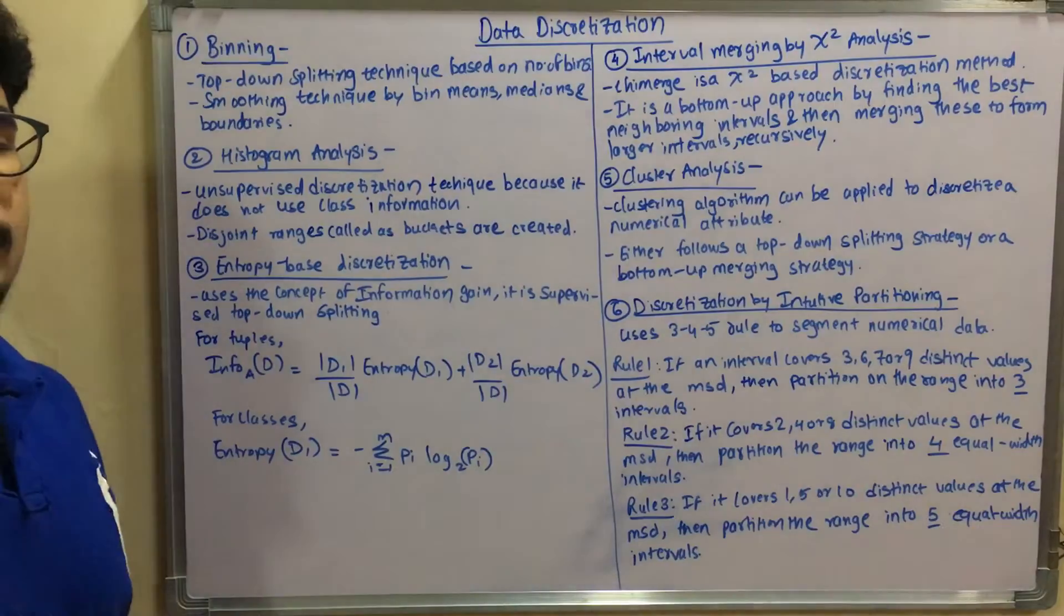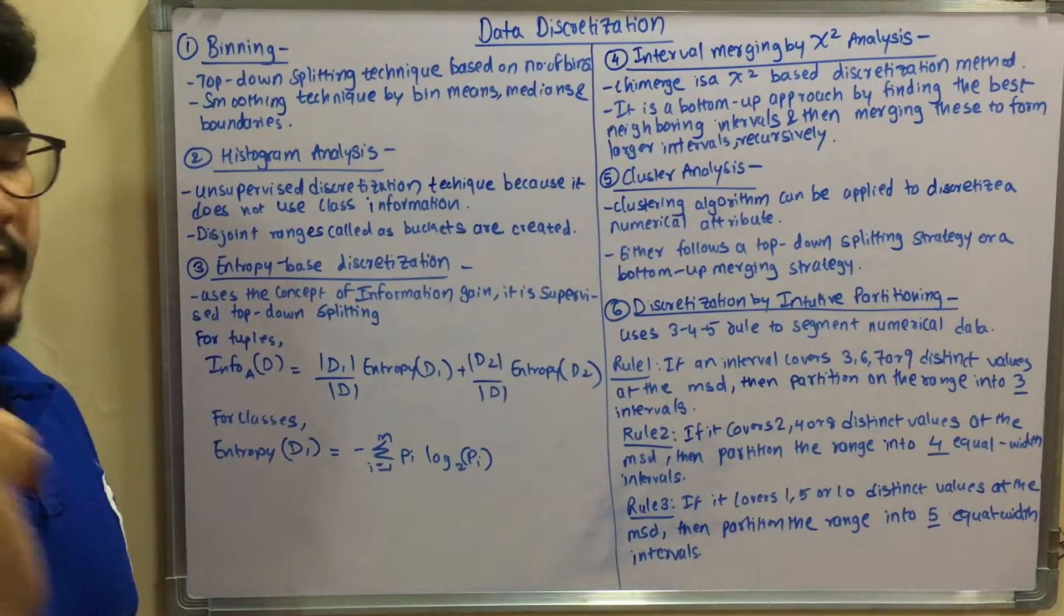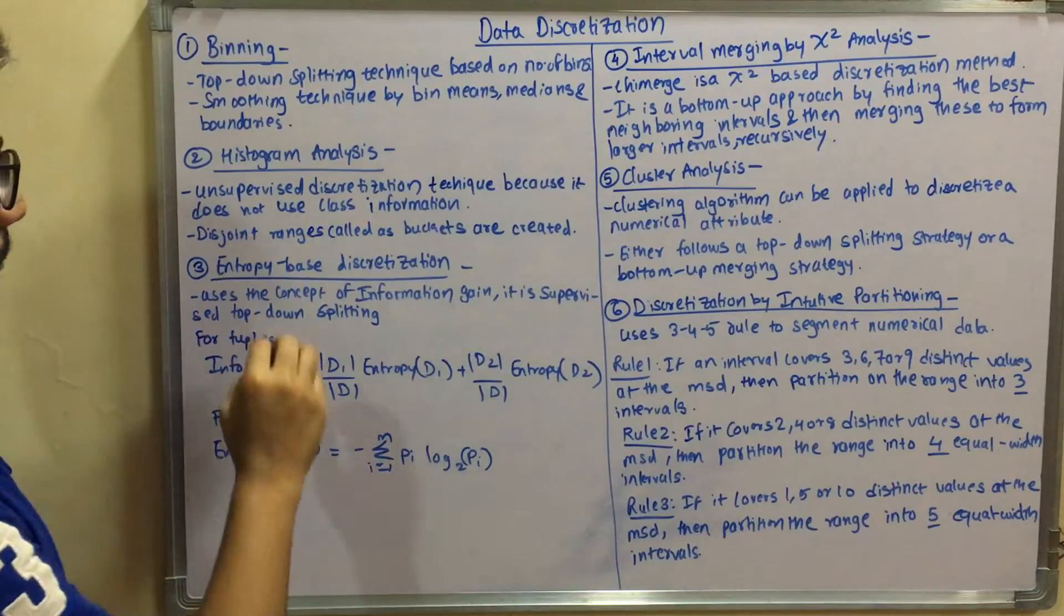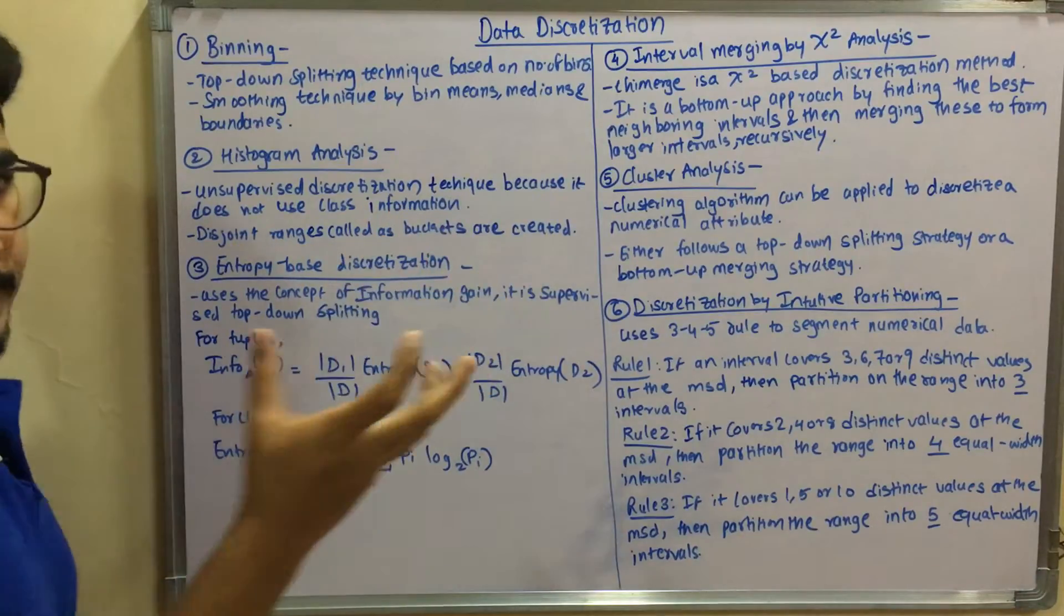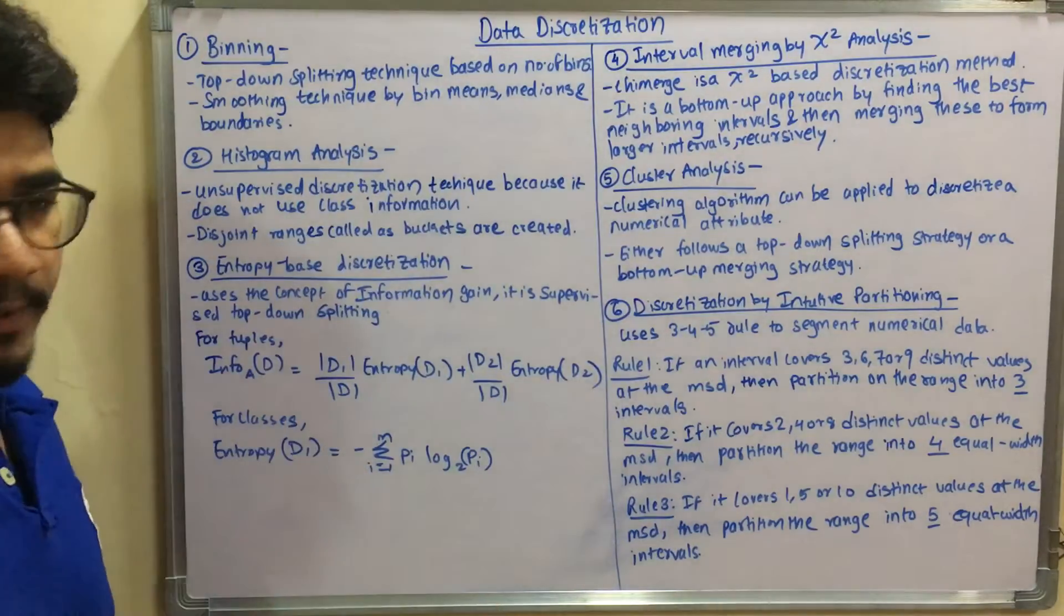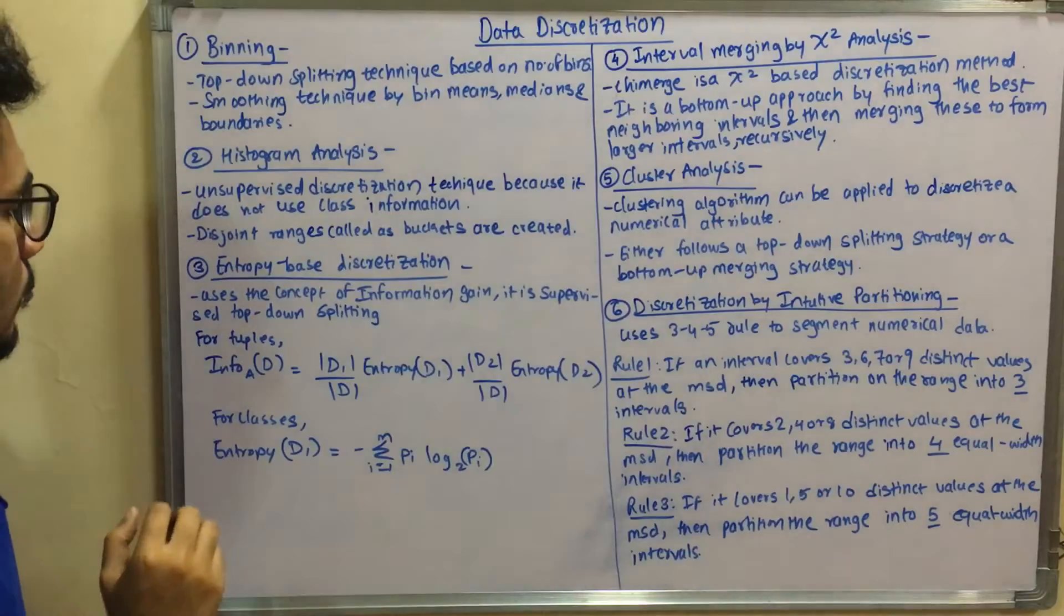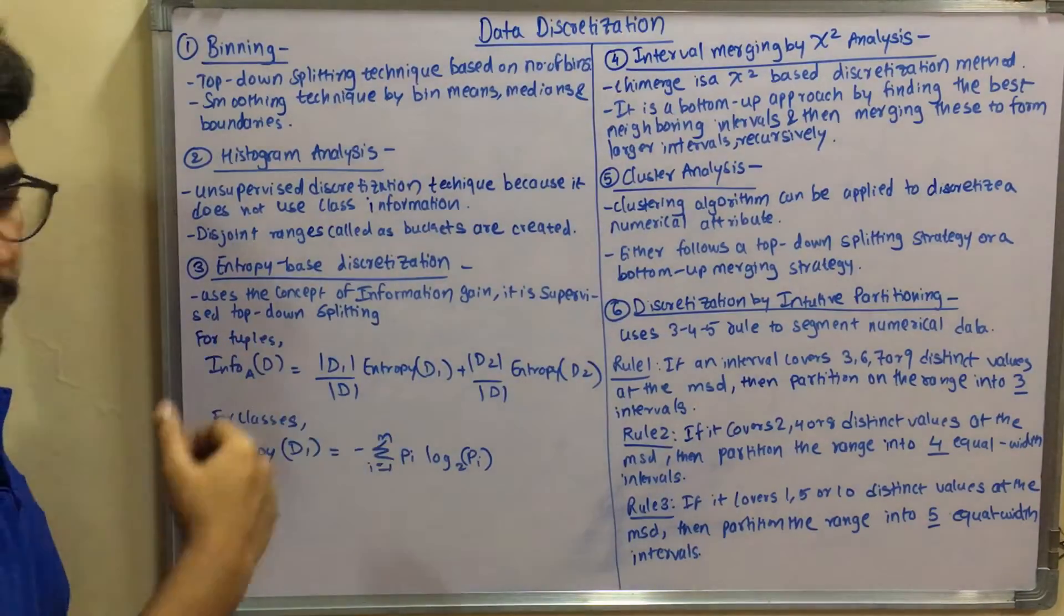Next you have entropy-based discretization. It uses the concept of information gain. It is a supervised top-down splitting technique. Since it uses information gain, it has to be a supervised technique. There are two kinds of formulas for tuples as well as for classes.